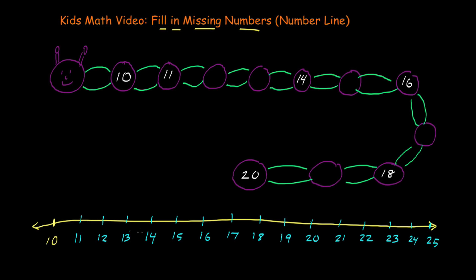You can see the number line allows us to go forwards, and we can always go backwards too. So now let's try to fill in the missing numbers, and we'll use the number line to help us. We see 10 right here, and what comes after 10 is 11. And then what comes after 11? 12. So we can fill in the number 12 as the first missing number.